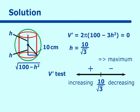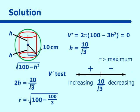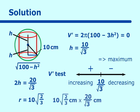To answer the question — determine the dimensions — we already have half the height, so the real height is 20 over the square root of 3. The radius equals the square root of 100 minus 100 over 3, which becomes 10 times the square root of 2/3. So our two dimensions are: radius equals 10 times the square root of 2/3 centimeters, and height equals 20 over the square root of 3 centimeters. That's our final answer on this problem.